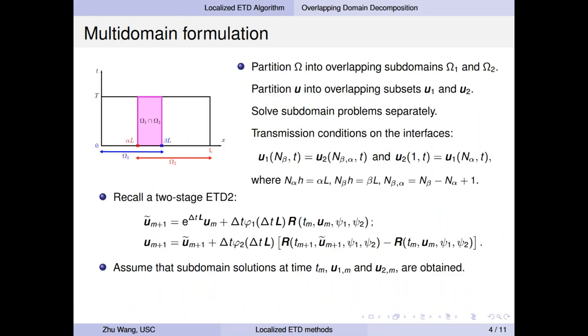Instead of considering the original problem, here we consider its multi-domain formulation. So let's take a one-dimensional domain for example. Assume this domain is partitioned into two overlapping subdomains, omega-1 and omega-2. Correspondingly, U is divided into two overlapping subvectors, U1 and U2. Then we will solve subdomain problems separately. These subdomain problems will talk to each other by imposing transmission conditions. So basically transmission conditions will enforce the subdomain solutions have the same values at the interface.